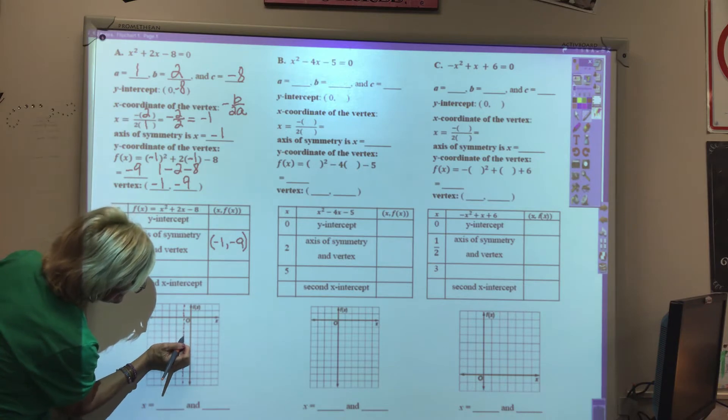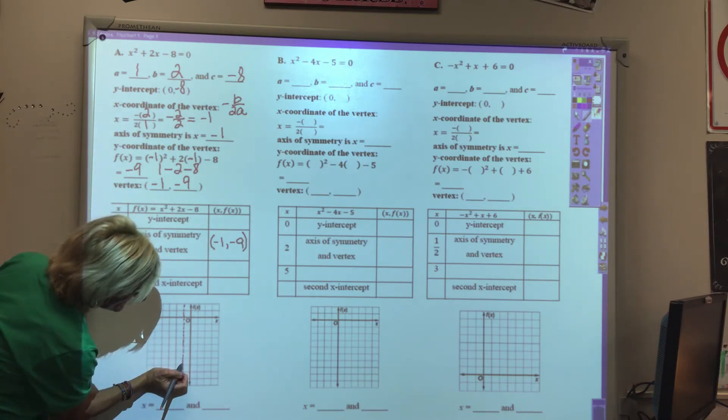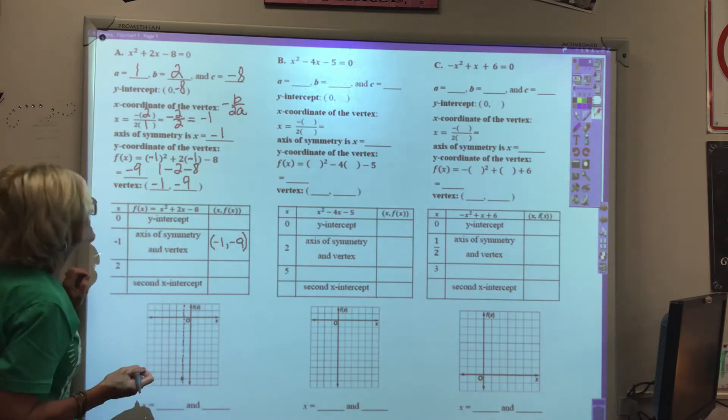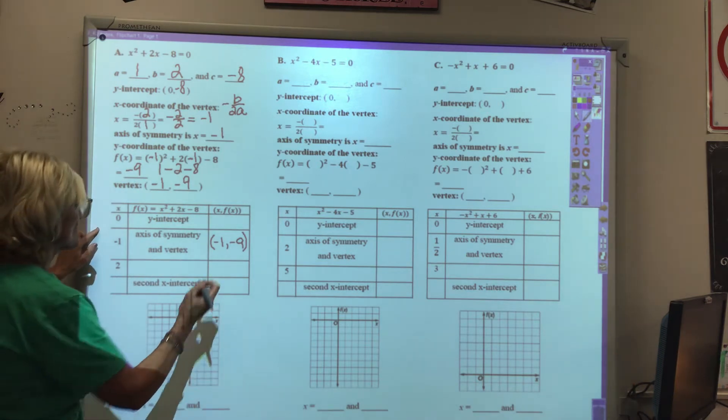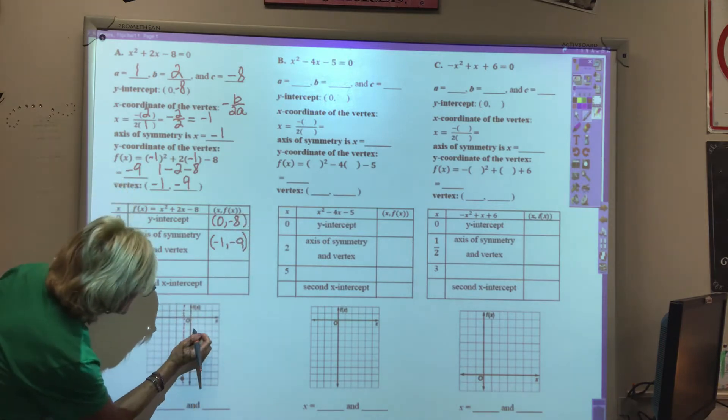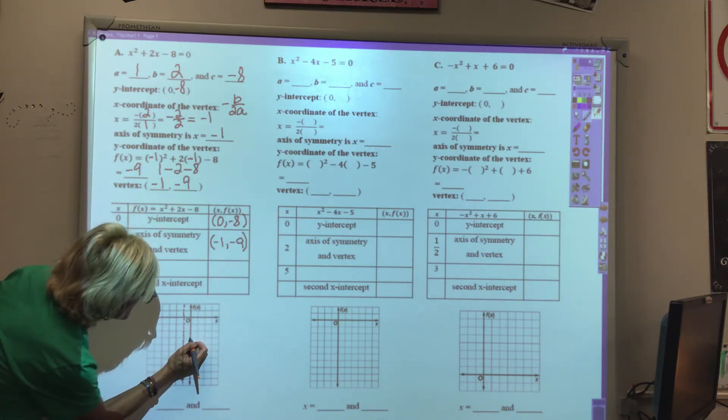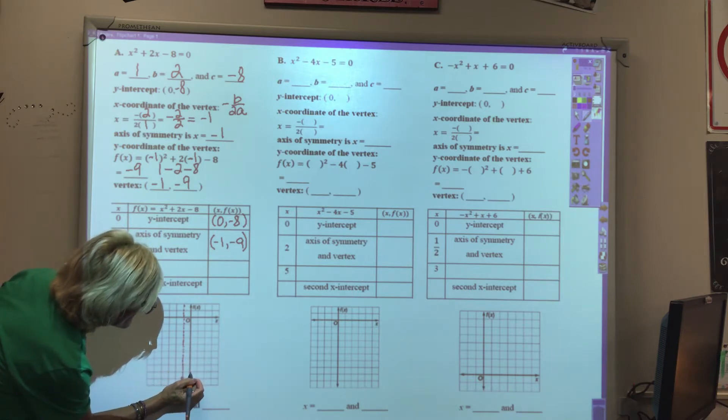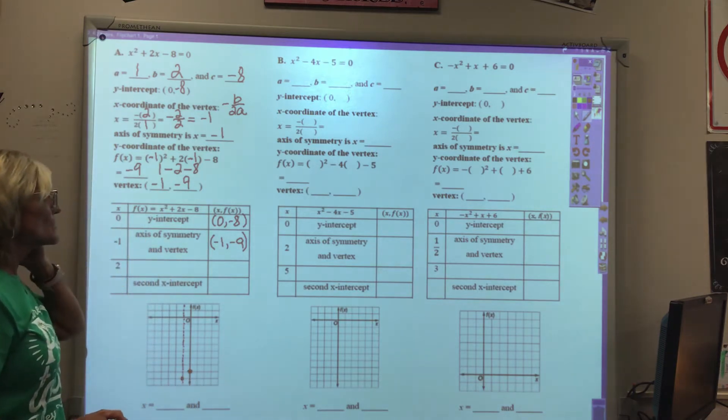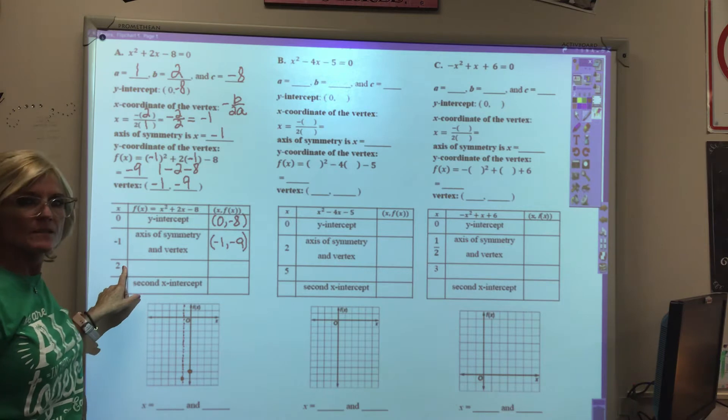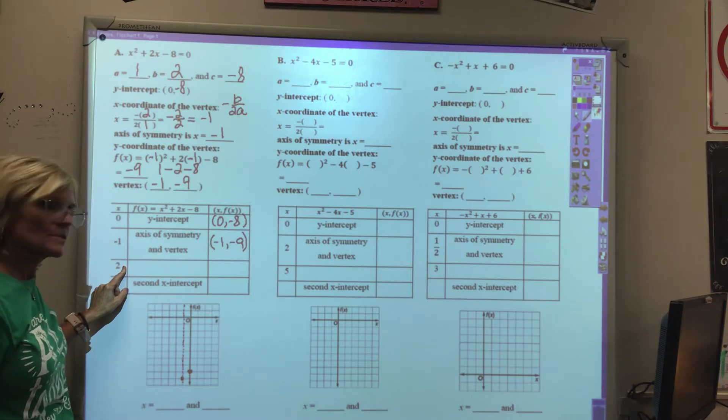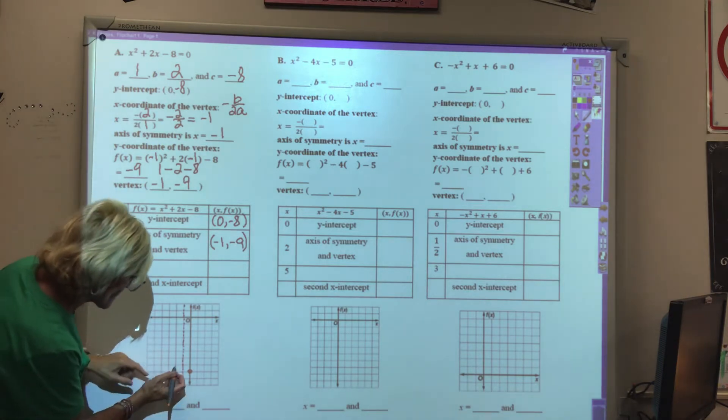Plotting the vertex and y-intercept on the graph. Note that there would be a point right here as well.